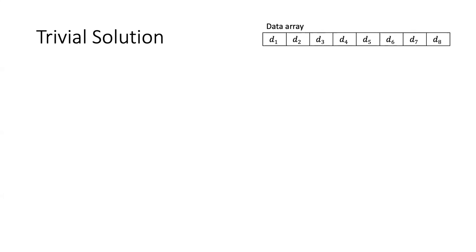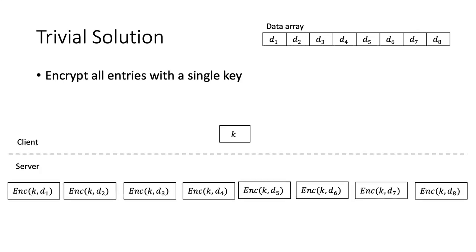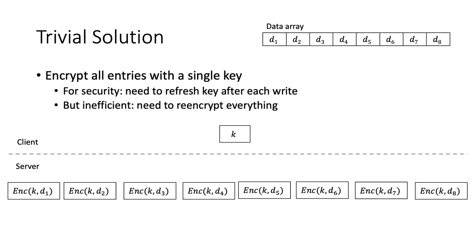What's the trivial solution? Say we have eight data items making up our data array. We'll just encrypt every entry with a single key K in our local client storage, and on the server we have the encryption of each data item under this key K. But for security we need to refresh the key after each write, which is inefficient because we need to re-encrypt everything.